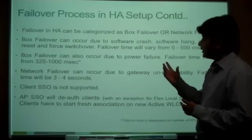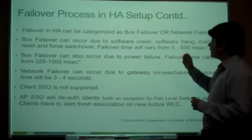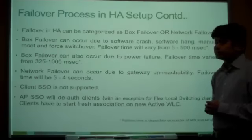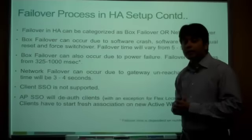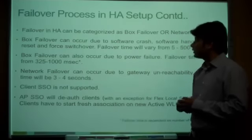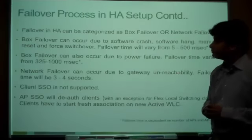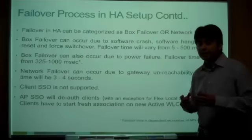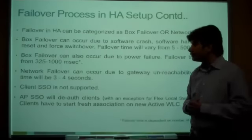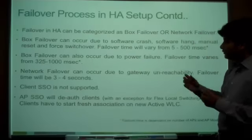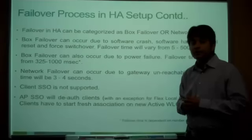Failover in HA can be categorized as box failover or network failover. A box failover can occur due to a software crash, software hang, manual reset, or forced switchover — in which case the active immediately sends a command to the standby via the RP port and redundant management interface. Failover time varies from 5 to 500 milliseconds — sub-second. A box failover can also occur due to power failure; in that case failover time varies from 325 to 1000 milliseconds. A network failover occurs when the active controller cannot reach the gateway, such as when a cable to the switch goes down.